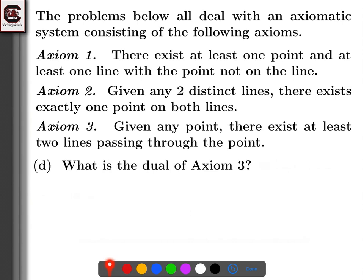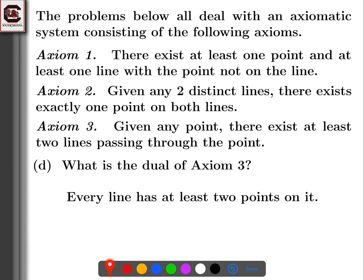What is the dual of axiom three? This is the type of question that could trip you up on a multiple choice test, because you don't get to use your own words — you have to match my wording. Axiom three says: given any point, there exists at least two lines passing through the point. The dual would be: every line has at least two points on it. Given any line, there must exist at least two points that are on the line. That's the dual, and you should recognize it when worded that way on a test.